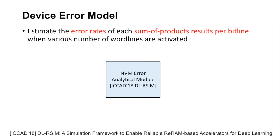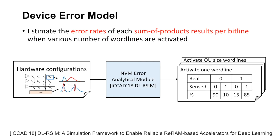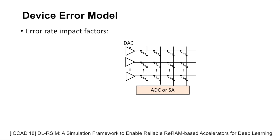We use the MVN error module in ZeroR-sync to model device-induced errors. This module estimates the error rates of each sum-of-product result per bit-line in a crossbar RRAM-based computing-in-memory accelerator. It takes error-related hardware parameters as inputs and outputs the error rates of each possible sum-of-product value when various numbers of word-lines are turned on. First, RRAM cells are not reliable due to the randomness of the conductive filament generation when voltage is applied.